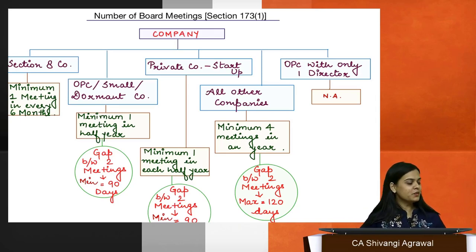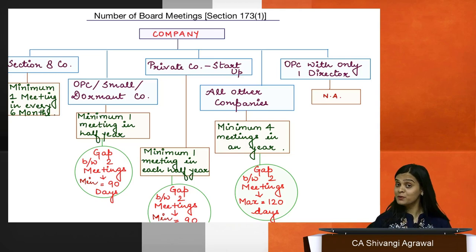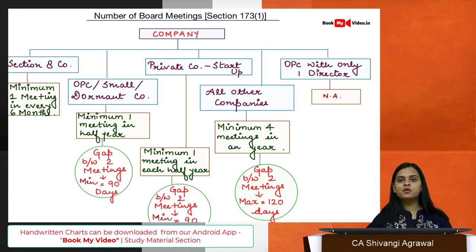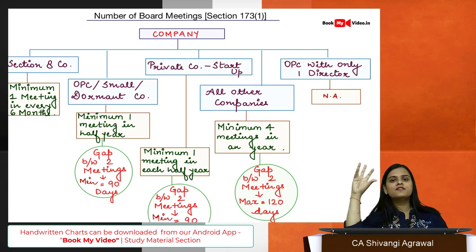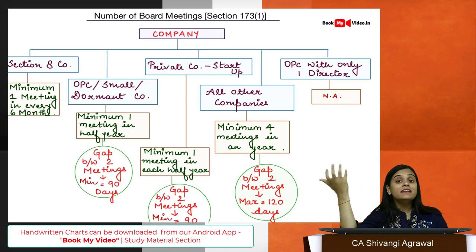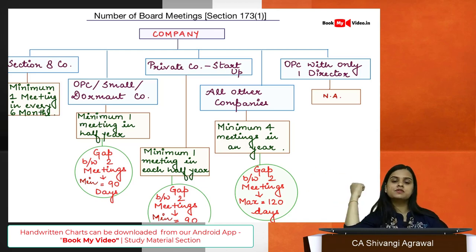Let's revise the chapter on meeting of board and its powers. This is a huge chapter with many sections and very important from an examination perspective. It commences with section 173. But before we start, let's have a basic understanding of how the board takes its decisions. A company is an artificial person and cannot take decisions on its own, so decision-making powers are distributed between the board of directors and the shareholders.